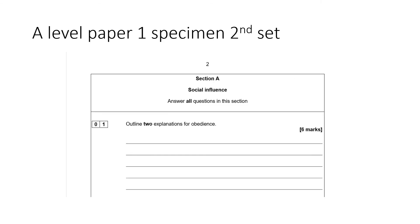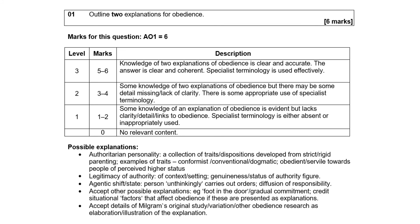Looking at past exam papers — the A level paper one specimen second set had: 'Outline two explanations for obedience.' This can relate to both the social psychological factors spread and the dispositional explanations/authoritarian personality spread. Remember, six marks and it says 'outline' — that means describe, just your AO1 marks, no evaluation needed. The mark scheme lists possible explanations, so you could talk about agentic state and legitimacy of authority, or authoritarian personality and legitimacy of authority, or authoritarian personality and agentic state.